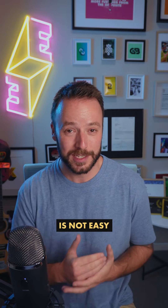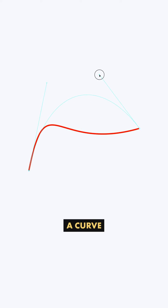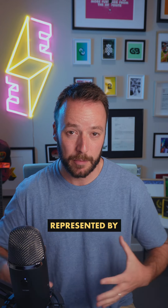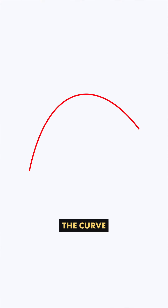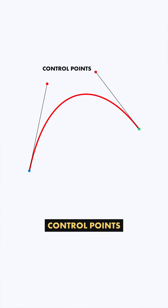Bear with me because this is not easy to explain in a short-form video. If I draw a curve in Adobe Illustrator, it can be represented by the start and end point of the curve — the path points — and by these handles, the ends of which are called control points.